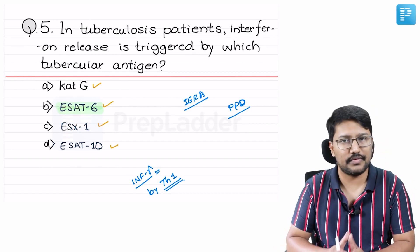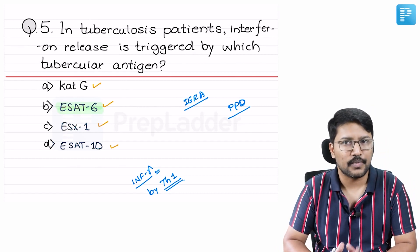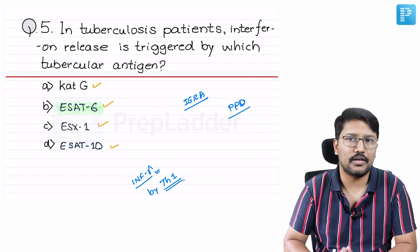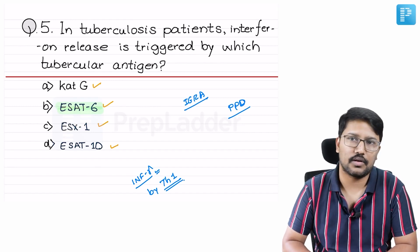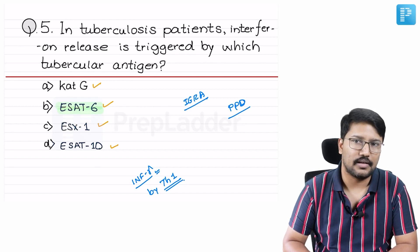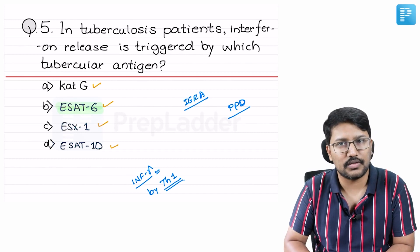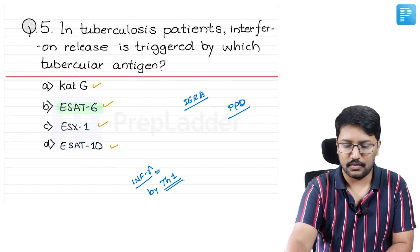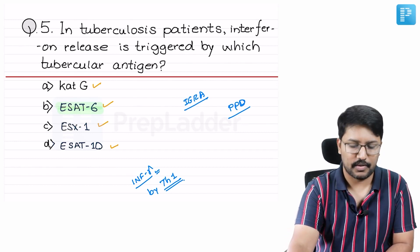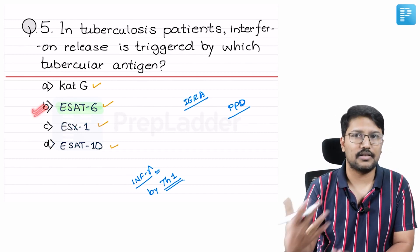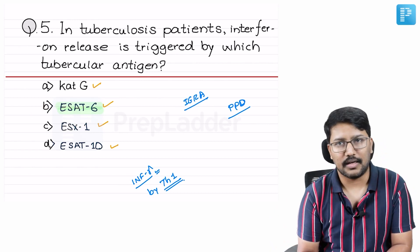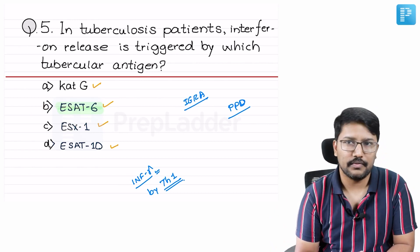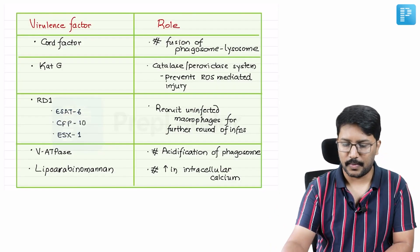As discussed in the main video, these two — ESAT-6 and CFP-10 — are very important virulence factors for tuberculosis. For now, remember it is ESAT-6, or the other option could be CFP-10. Both will be valid right answers.